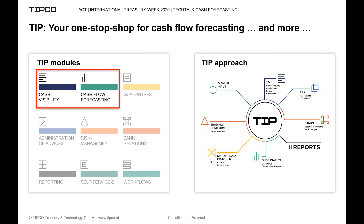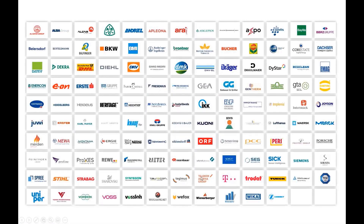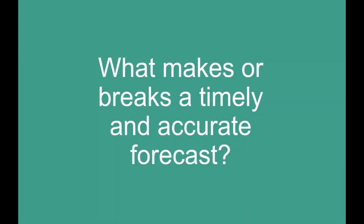We currently serve more than 130 international clients — multinational corporations from various industries — among them the likes of British American Tobacco, Lufthansa, Deutsche Post DHL, and many more. Now let's take a quick look at the factors that make or break a timely and accurate cash flow forecast from our experience.